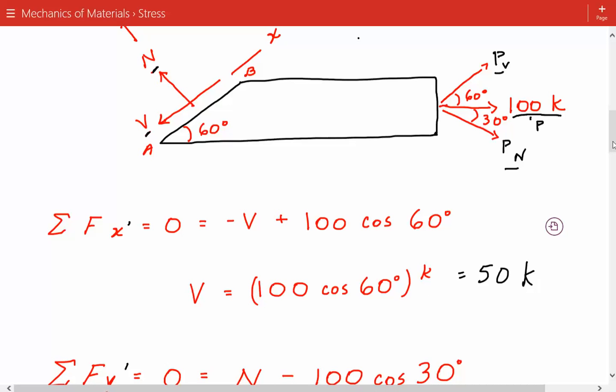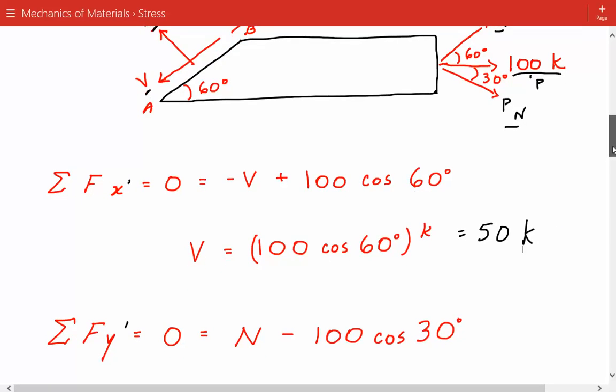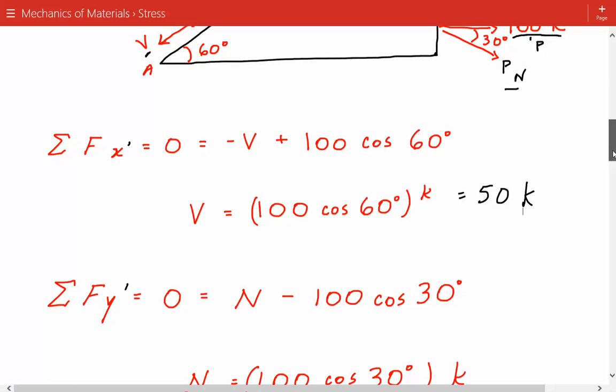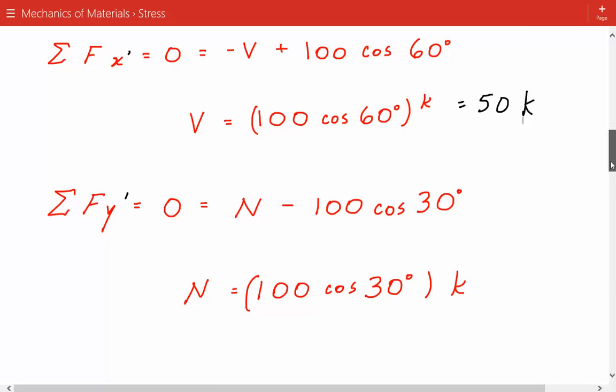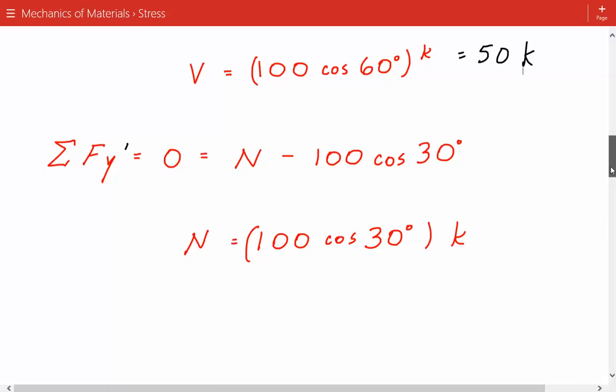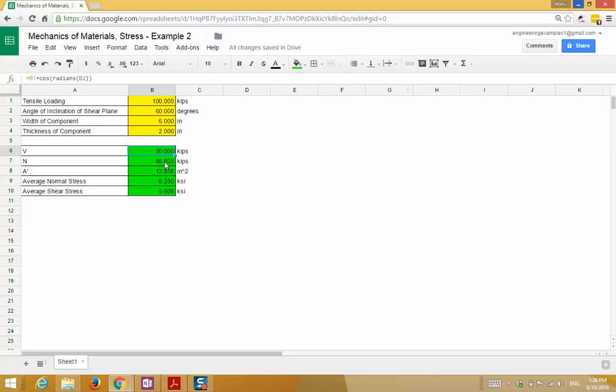Next we sum the forces in the Y prime direction to get the normal force acting on this plane. And the normal force is equal to 100 times cosine of 30 degrees. So that's equal to about 86.603 kips.